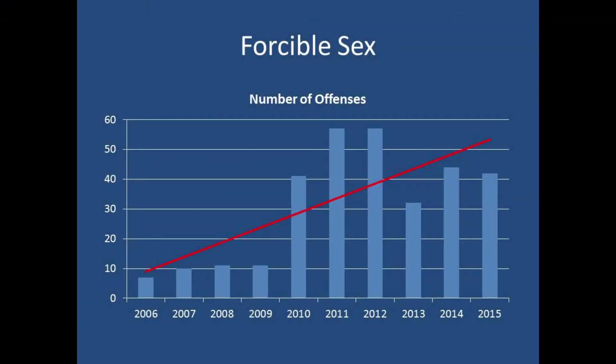Looking at another graph — forcible sex offenses — we've seen that continue to rise in the city, and that's also a statewide trend. Around 2010 is when it really started taking off. We have no direct evidence, but anecdotally we believe it's the advent of social media and the connections made there that create opportunities for sexual offenses to take place. And this category covers more than just rape — it's any sexual activity that is forced.